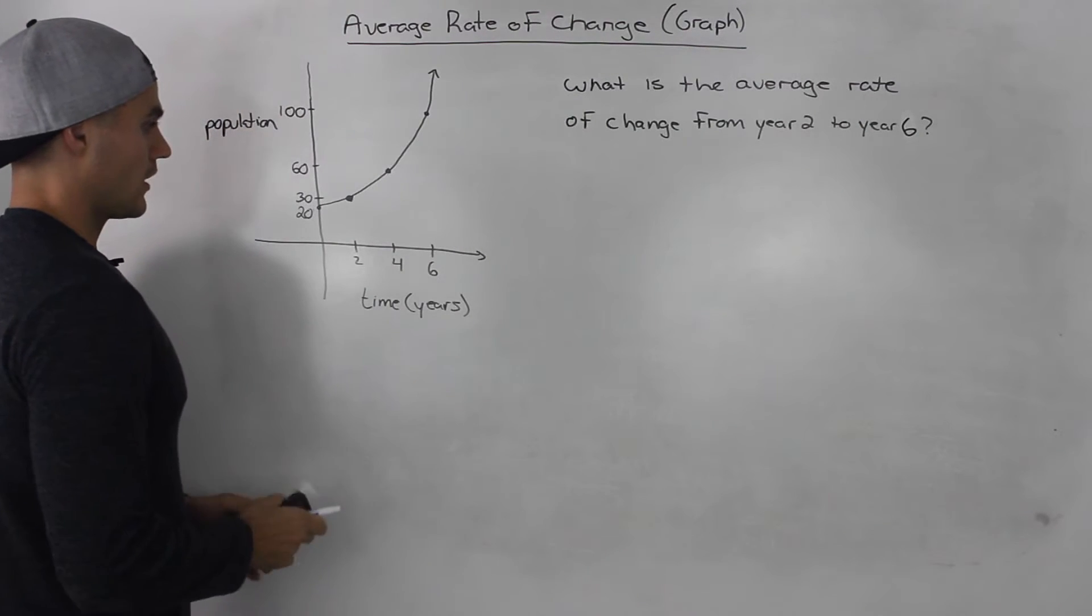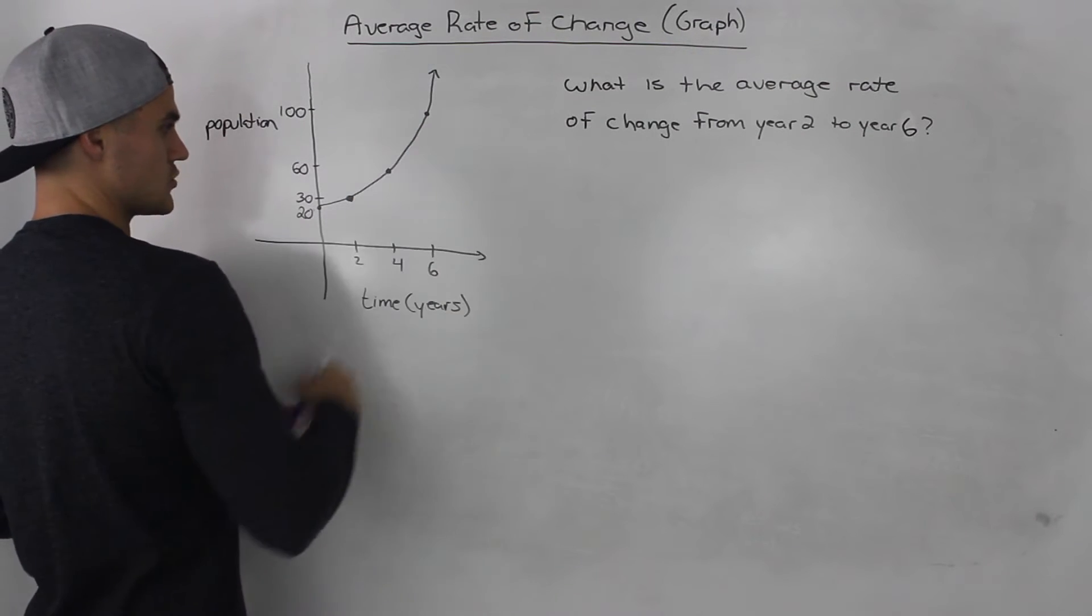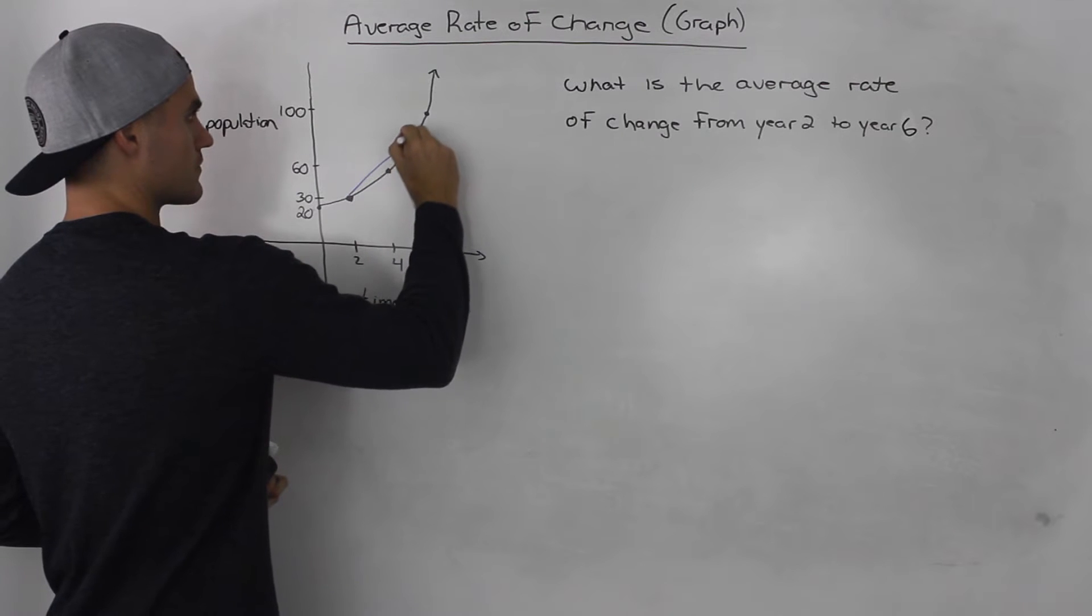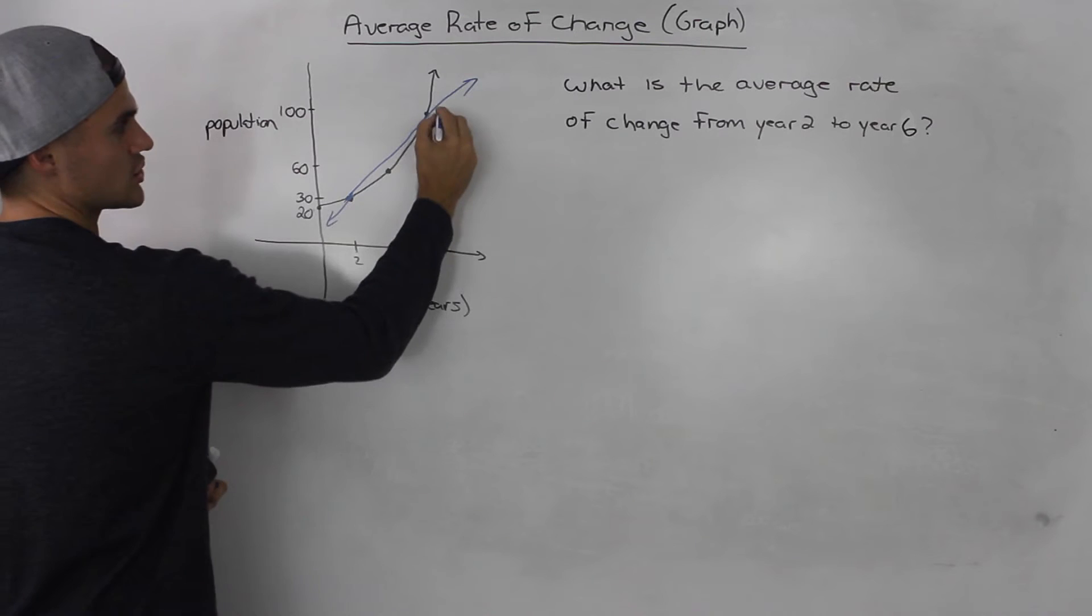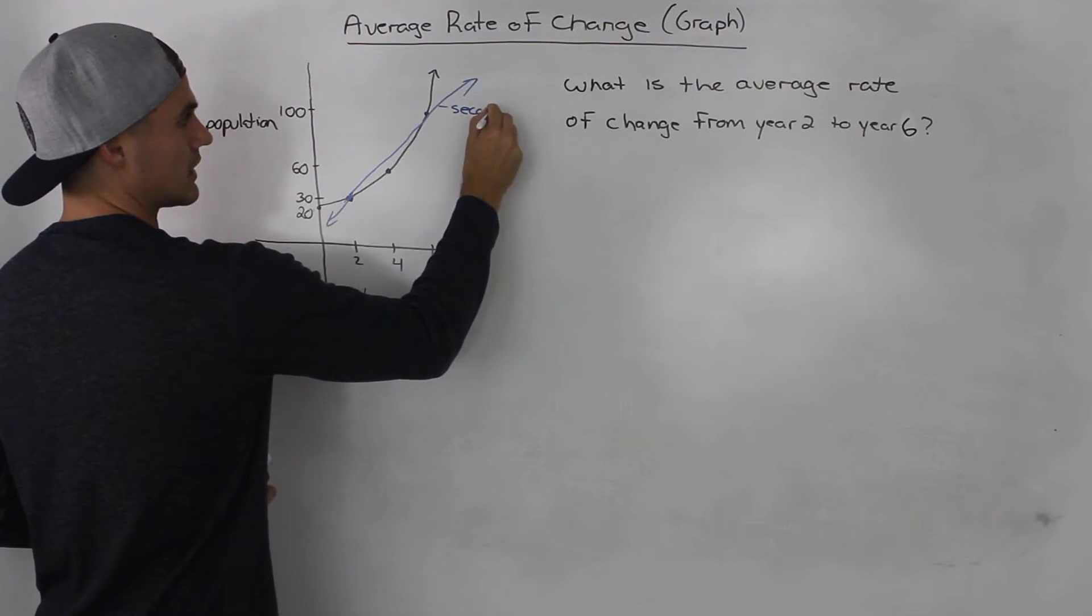So what they want is the average rate of change from year 2 to year 6, so between these two points. And if we draw a line between them, this is the secant line. Basically, to find the average rate of change, we have to find the slope of this secant line.